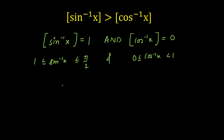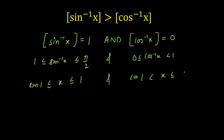Taking sin on both sides of [1, π/2] — since sin inverse is an increasing function, the inequality direction does not change — we get sin(1) ≤ x ≤ sin(π/2) = 1, giving the first condition: x ∈ [sin1, 1]. Taking cos on both sides of [0, 1) — cos inverse is a decreasing function, so the inequality reverses — we get cos(1) < x ≤ cos(0) = 1, giving the second condition: x ∈ (cos1, 1].